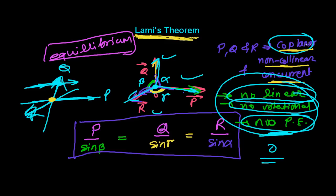Everything should be zero — that's when we say the forces are in equilibrium. When the forces are coplanar, non-collinear, concurrent, and in equilibrium, each force is proportional to the sine of the angle opposite to the other two forces. That's Lami's theorem. In the next video we'll learn the proof of Lami's theorem, and we use this theorem a lot in physics related to springs and balance problems. Bye-bye.